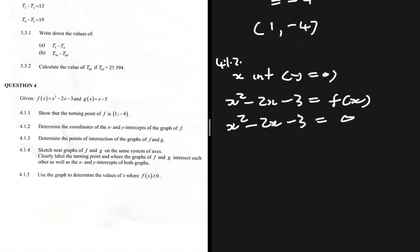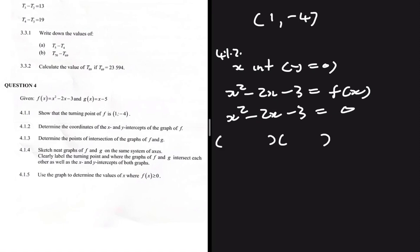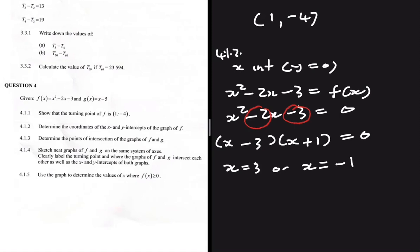We can factorize: we open two brackets (x )(x ) equals 0. We need two numbers that multiply to give minus 3 and add to give minus 2. That is minus 3 and plus 1. So we get (x minus 3)(x plus 1) equals 0, giving x equals 3 or x equals minus 1. The x intercepts are (3, 0) and (minus 1, 0).